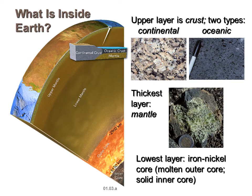What is the core made of? The lowest layer of the Earth is the core, made of iron and nickel. There is a molten outer core and a solid inner core — that's the key difference between them. They formed because when the Earth first formed, it was completely molten and cooled from the outside in, and over time all of the densest material — iron and nickel being the most dense — sank to the center.